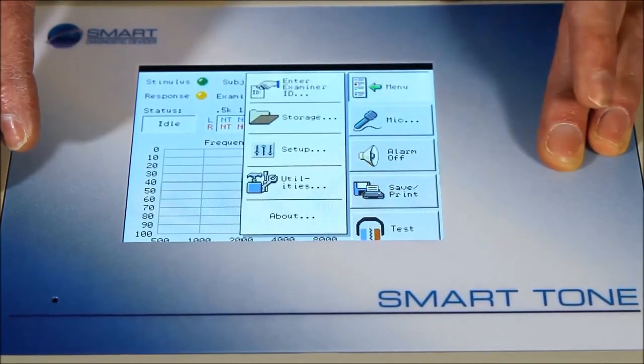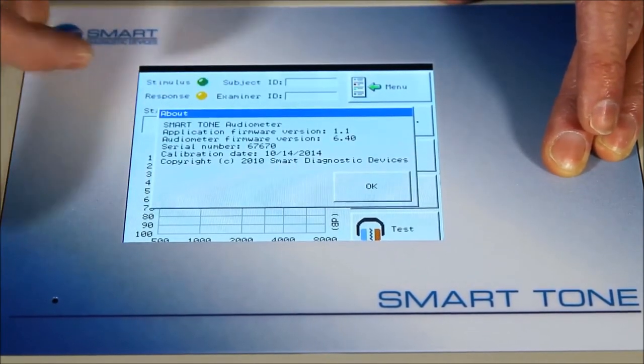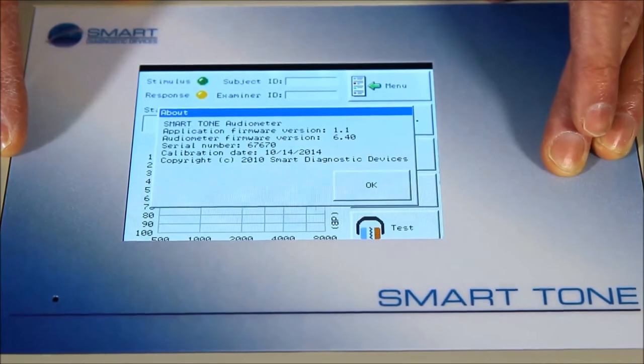The high-level menu screen just gives you information as to what version of the product you're using, and when it was last calibrated if you weren't sure.